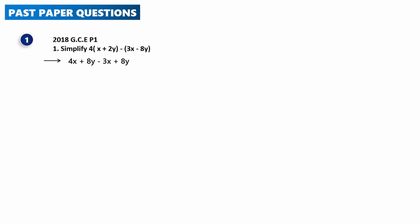Past paper question — 2018 GCE Paper 1: Simplify 4(x + 2y) − (3x − 8y). The 4 multiplies x and 2y, giving 4x + 8y. The negative sign multiplies 3x and −8y, giving −3x + 8y. Grouping like terms: 4x − 3x = x, and 8y + 8y = 16y. The final answer is x + 16y.